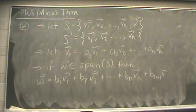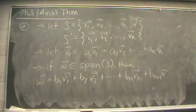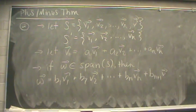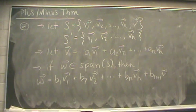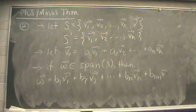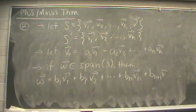Here's the setup for part 2 of the plus-minus theorem proof. We write down the two sets S and S'. S consists of V1 up to Vn plus the extra vector V, and S' is the set where we remove V, leaving only V1 up to Vn. We're allowed to assume that vector V is a linear combination of the other vectors in S.